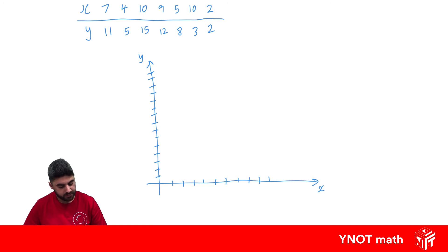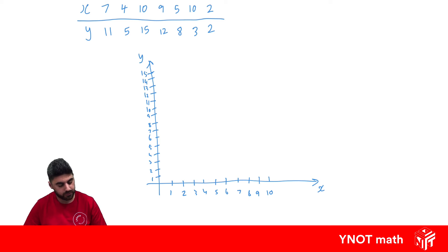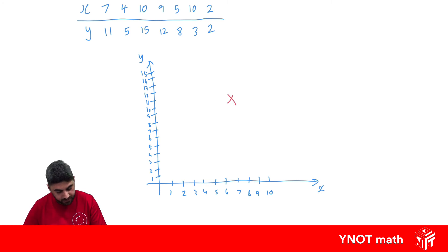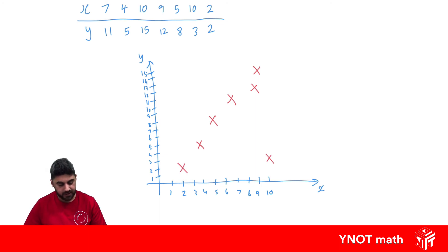Now let's plot these points. So 7 and 11 — 7 for x, 11 for y — it's going to be about there. 4 and 5, about there. 10 and 15, might be here. 9 and 12, about there. 5 and 8, about there. 10 and 3, it's going to be there. And 2 and 2, it's about there. So there's our scatter plot, all plotted.